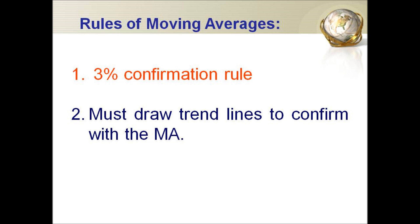Next, we look at the rules of the moving average. The first rule is confirmation. When you apply the single line or the two-line crossovers, you don't act immediately when you see the crossover — you need a confirmation. Besides a momentum indicator like the ADX line, you may also use the 3% rule: a price move of more than 3% in a certain direction can act as a confirmation.